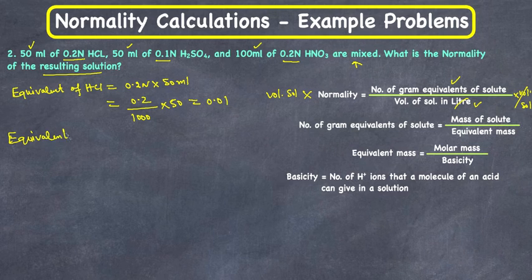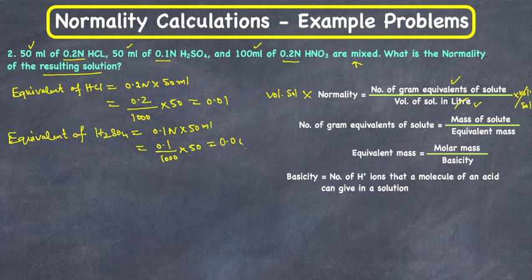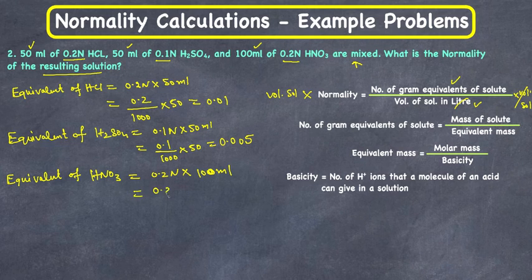Equivalents of H₂SO₄ = 0.1 N × 50 ml = 0.1/1000 × 50 = 0.005 equivalents. Equivalents of HNO₃ = 0.2 N × 100 ml = 0.2/1000 × 100 = 0.02 equivalents.